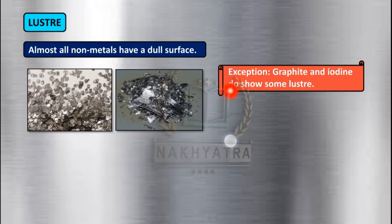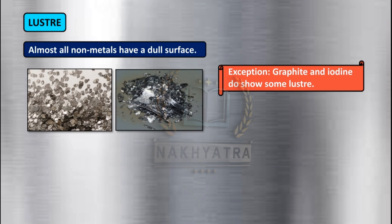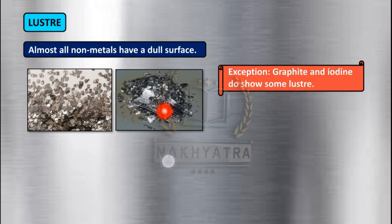But there is again an exception — graphite and iodine do show some lustre. These are non-metals, and though non-metals generally have a dull surface, graphite and iodine are exceptions because they show the property of lustre, meaning they have a shiny surface.